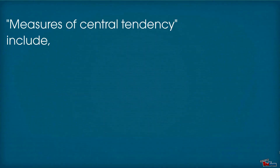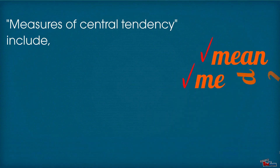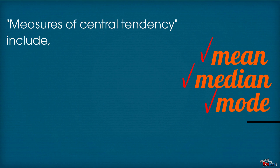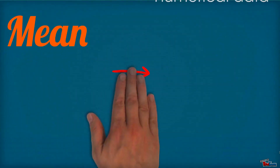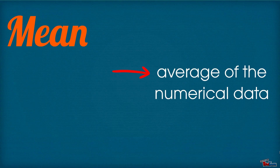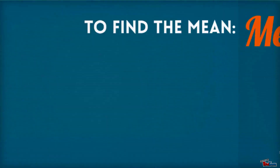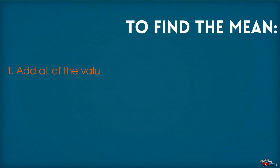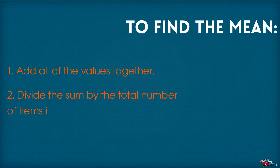Measures of Central Tendency include Mean, Median, and Mode. Mean is the average of the numerical data. To find the mean, add all of the values together and then divide the sum by the total number of items in the data set.